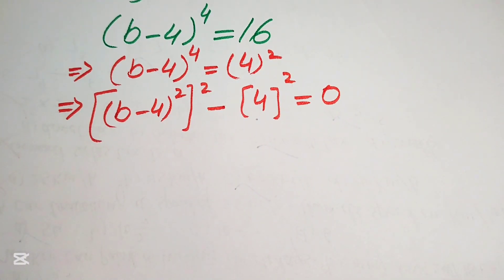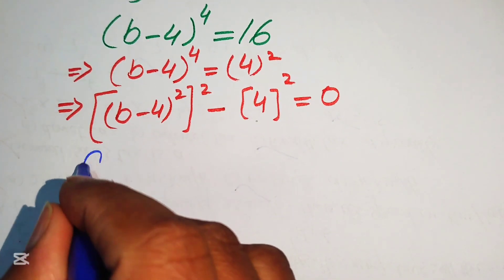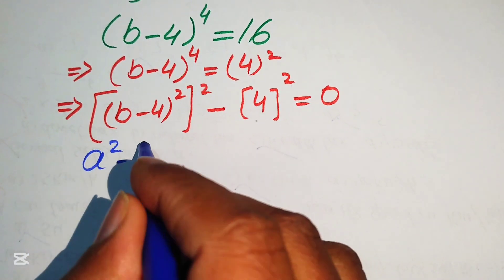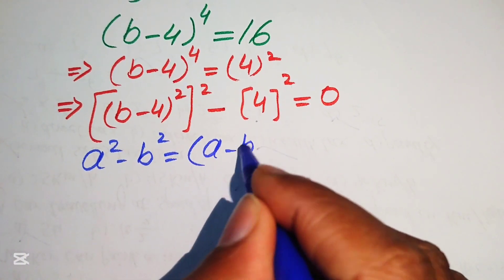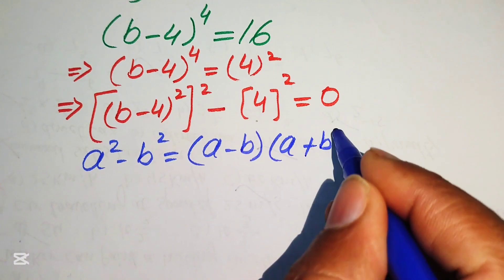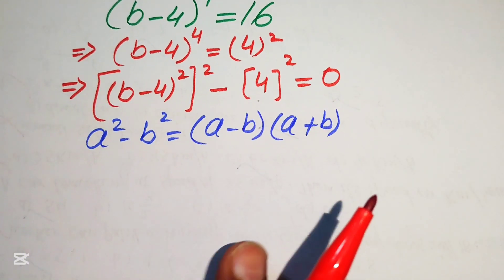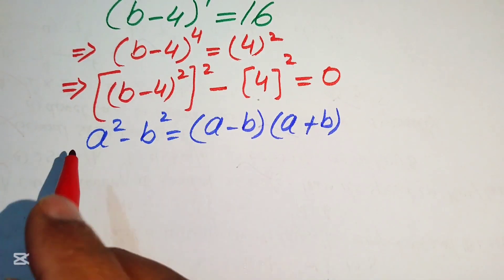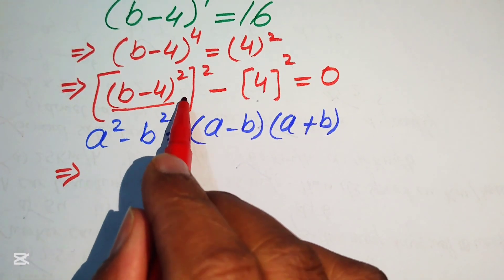After this step we need to use the difference of squares identity. You know that if we have a squared minus b squared, it equals (a minus b) times (a plus b). We apply this identity to our equation.